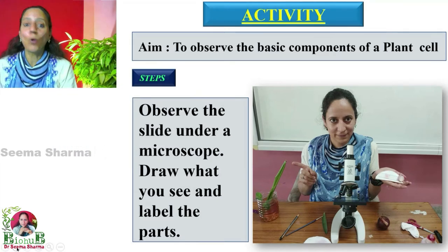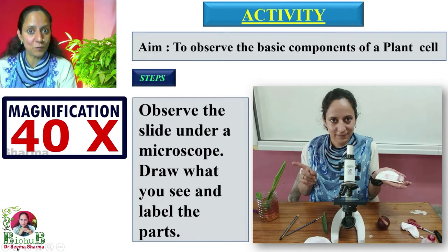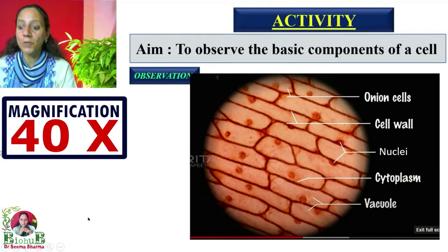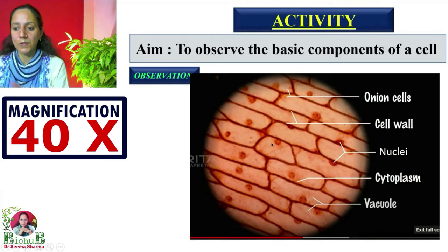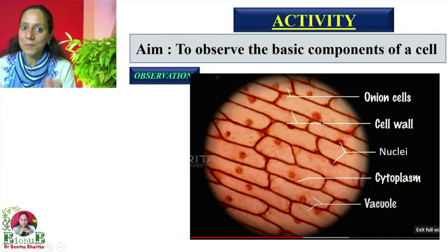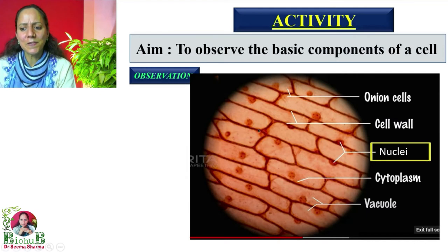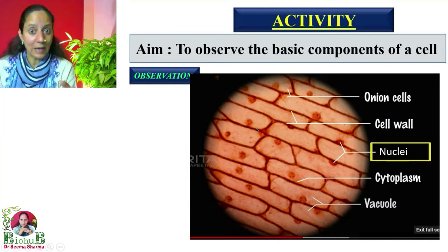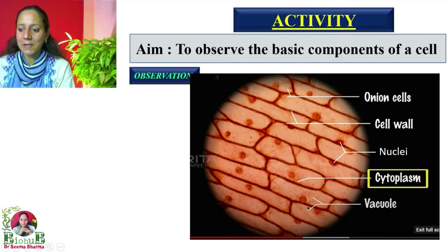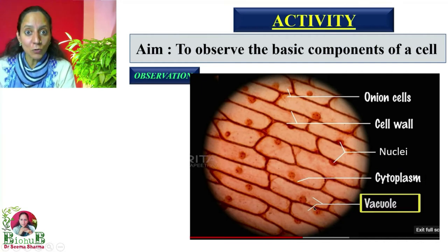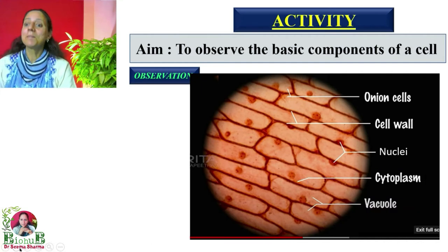When you observe this slide under the microscope at 40x magnification, you are going to observe: the outer thick cell wall, the nucleus — which will be visible somewhere in one corner — the cytoplasm, and even vacuoles, which will be visible very faintly.